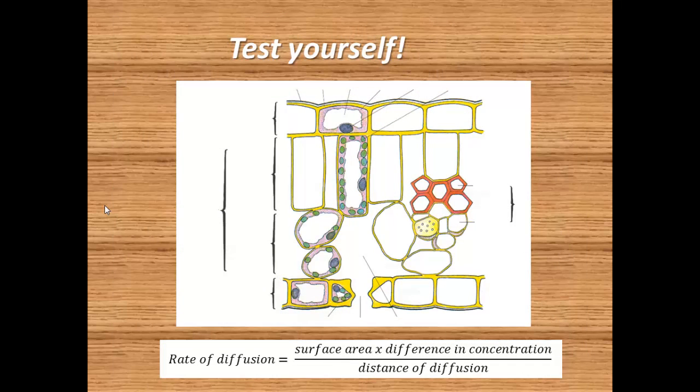To test yourself, try to remember what each of the labels in the diagram are and then think about how each feature helps to maximise the rate of photosynthesis — keeping in mind the rate of diffusion equation. Have a go at that and see how you do.